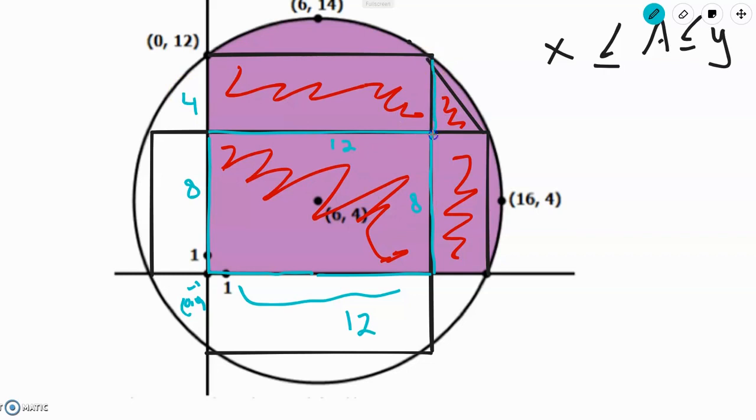So, let's just put 4 over here. And that means this length over here is also 4. This length over here is 12, similar to this one. This length is 8.